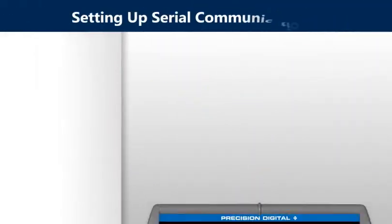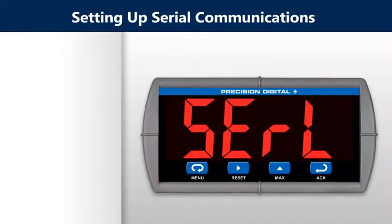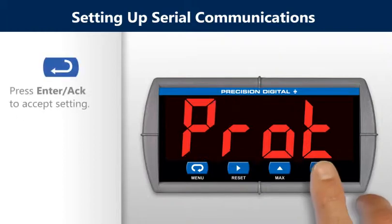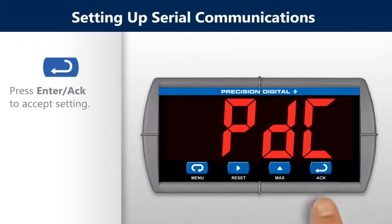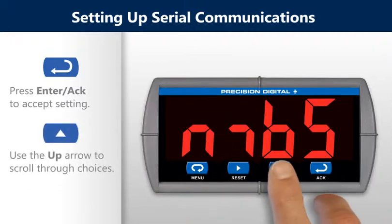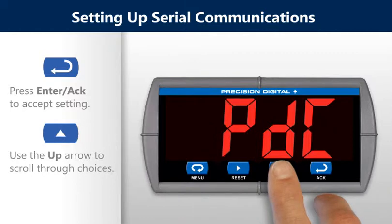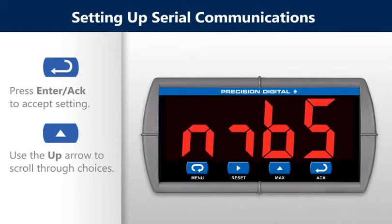To set up serial communications, use the serial menu. Press the enter button to accept the setting. Press the enter button again, then press the up arrow to select the protocol for either PDC or Modbus.